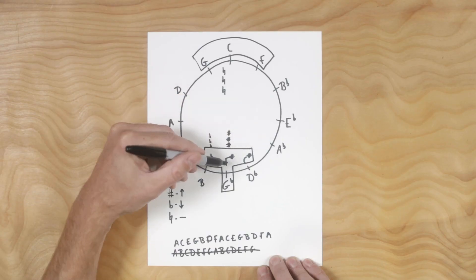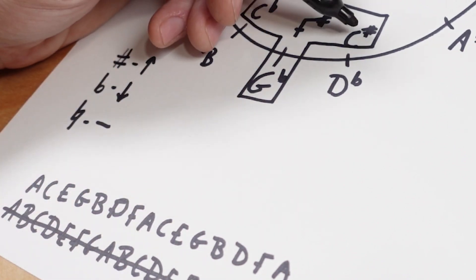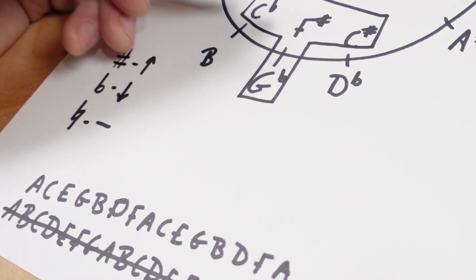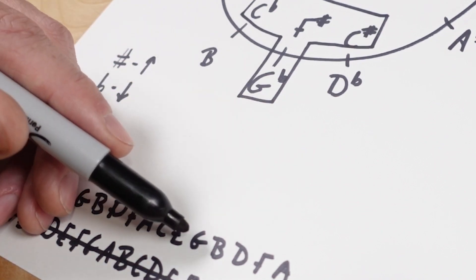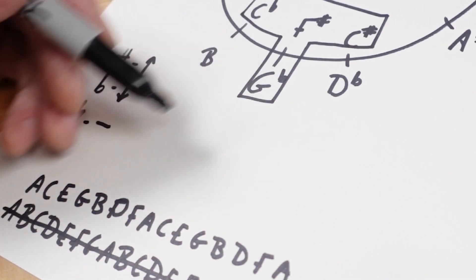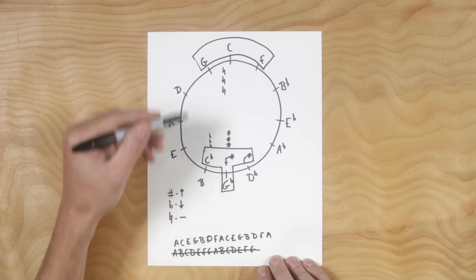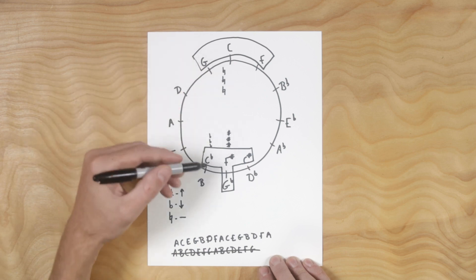If it was F sharp, then it would be F sharp, A sharp, C sharp. If it was C sharp, it would be C sharp, E sharp, G sharp. If it's C flat, it's C flat, E flat, G flat. If it's G flat, it's G flat, B flat, D flat. Memorize that first. Use that to memorize this.